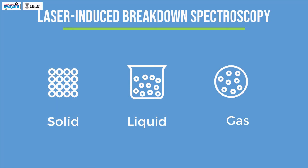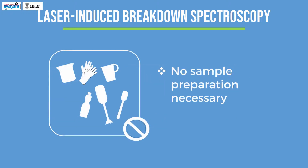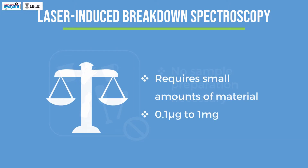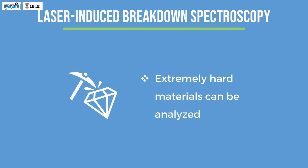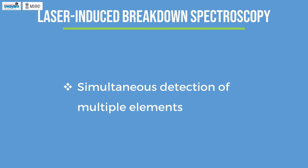A variety of samples can be analyzed; it is mainly used for solids and liquids, but gas samples can also be analyzed. Little or no sample preparation is required. LIBS analysis typically requires a very small amount of material — typically 0.1 microgram to 1 milligram — and therefore this analysis is practically considered non-destructive compared to conventional elemental analysis techniques such as AES and CHNS analysis. Extremely hard materials that are difficult to digest or dissolve, such as ceramics and superconductors, can also be analyzed. Simultaneous detection of multiple elements including metals and non-metals is a major advantage of this technique.